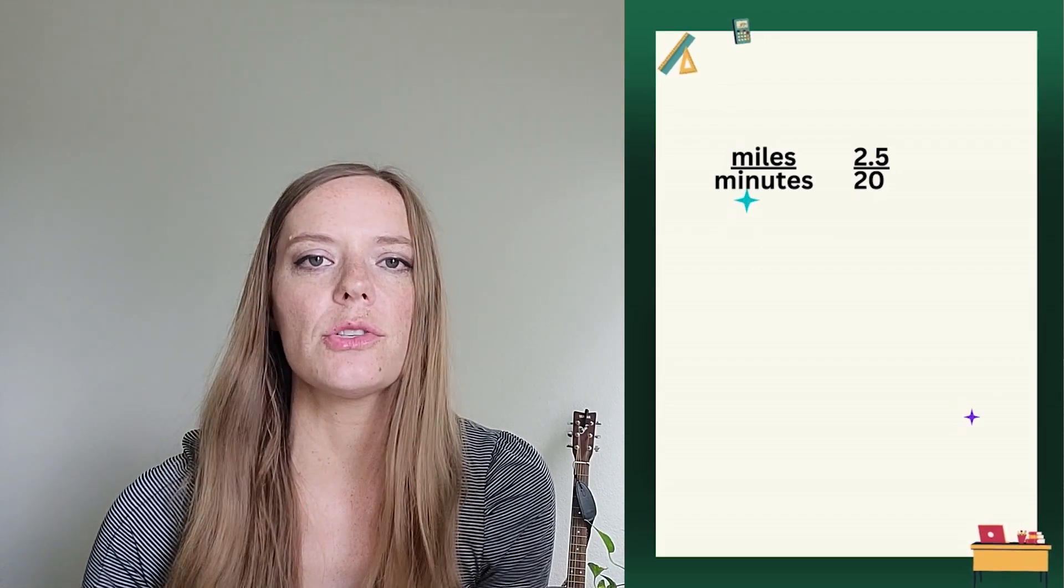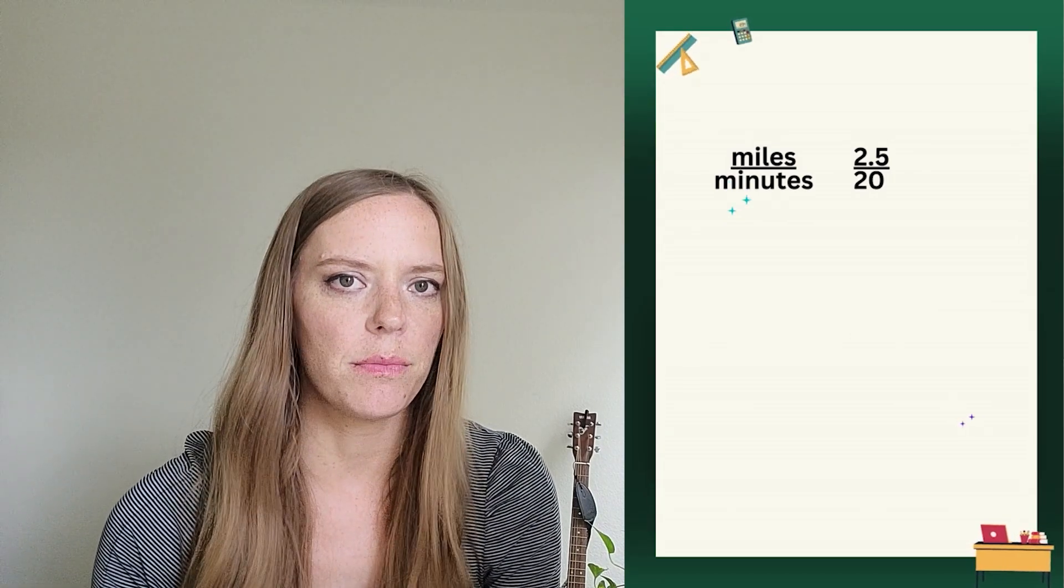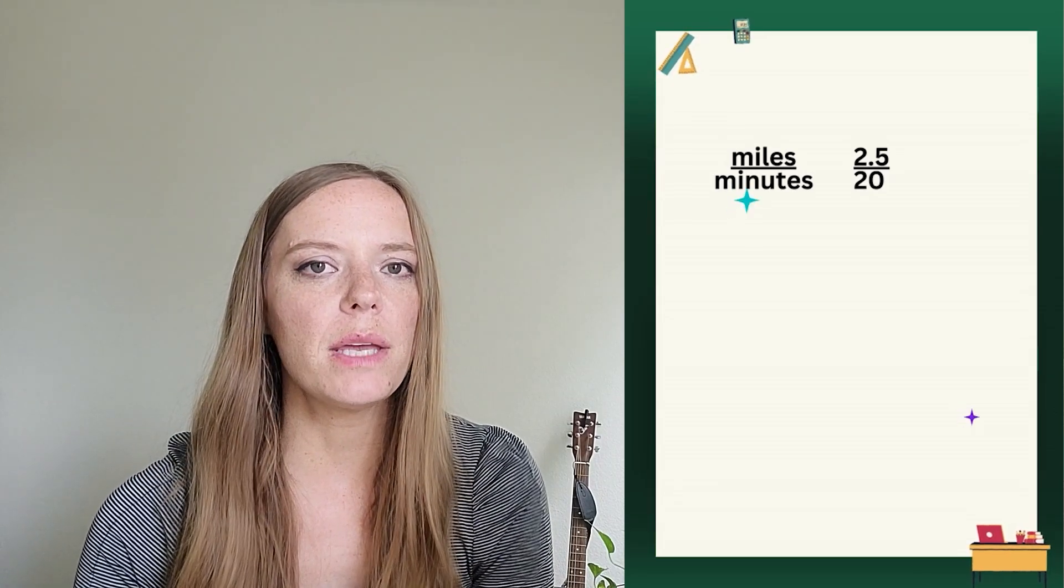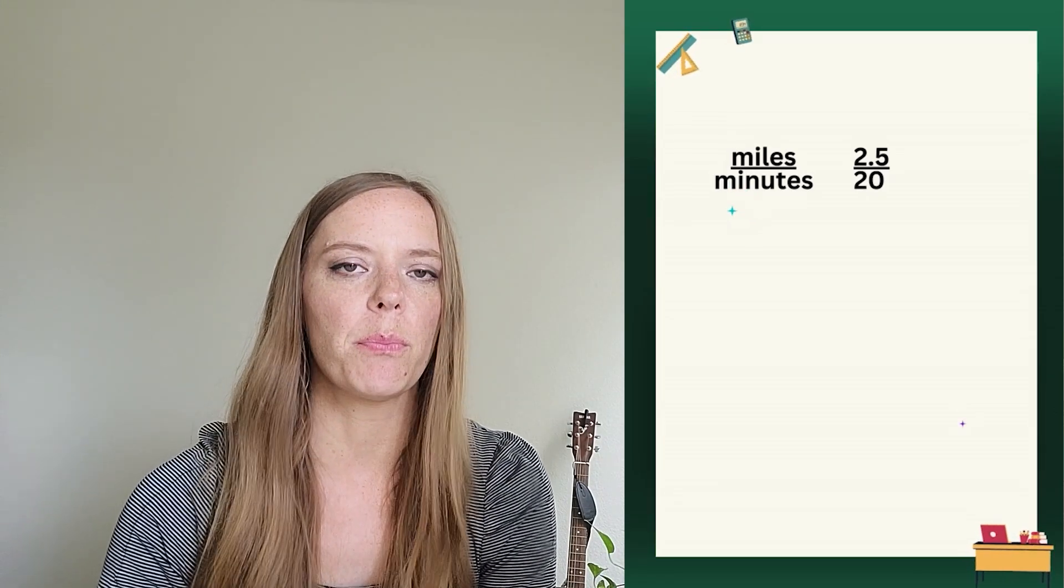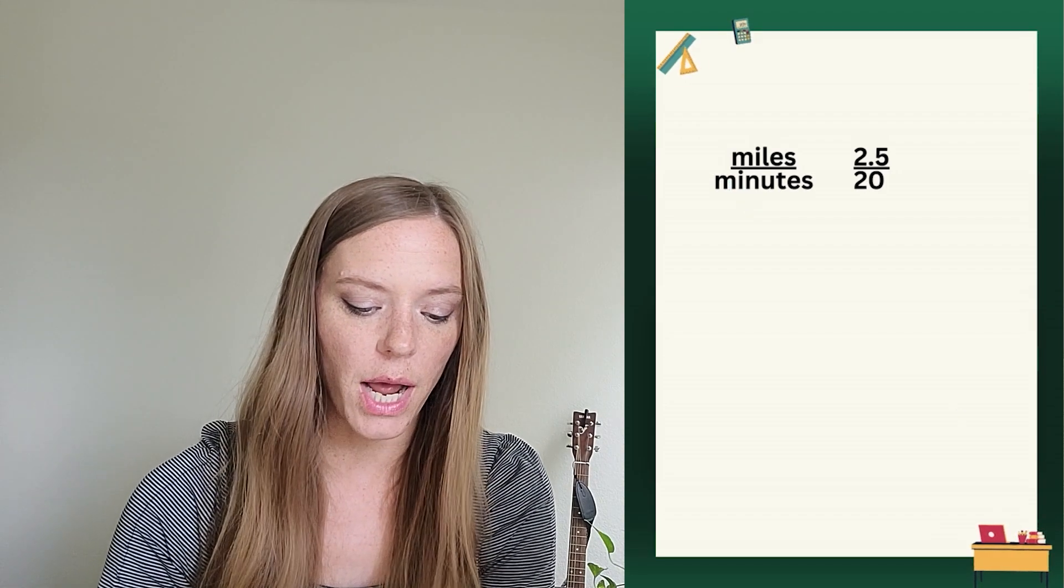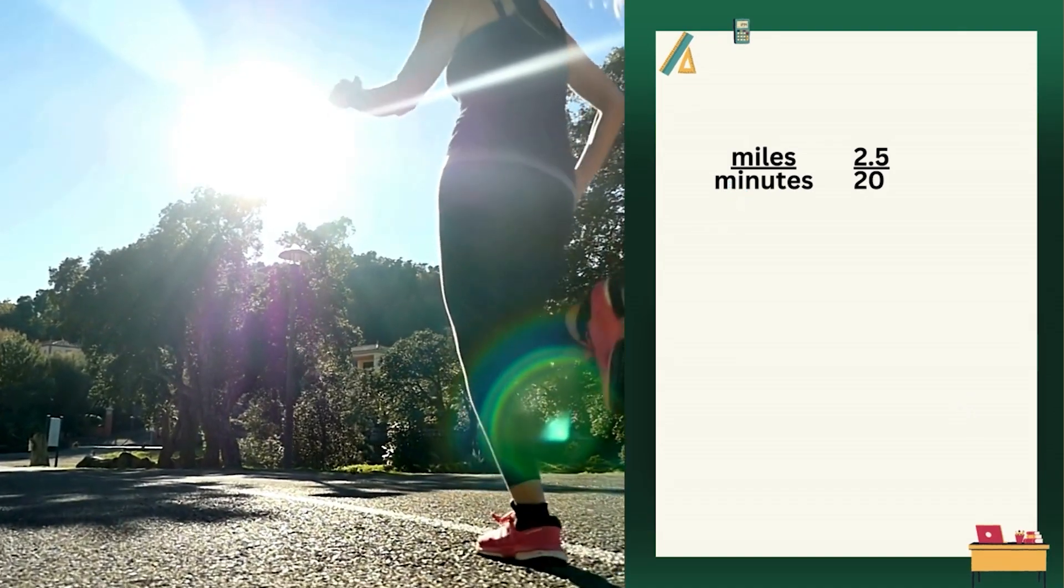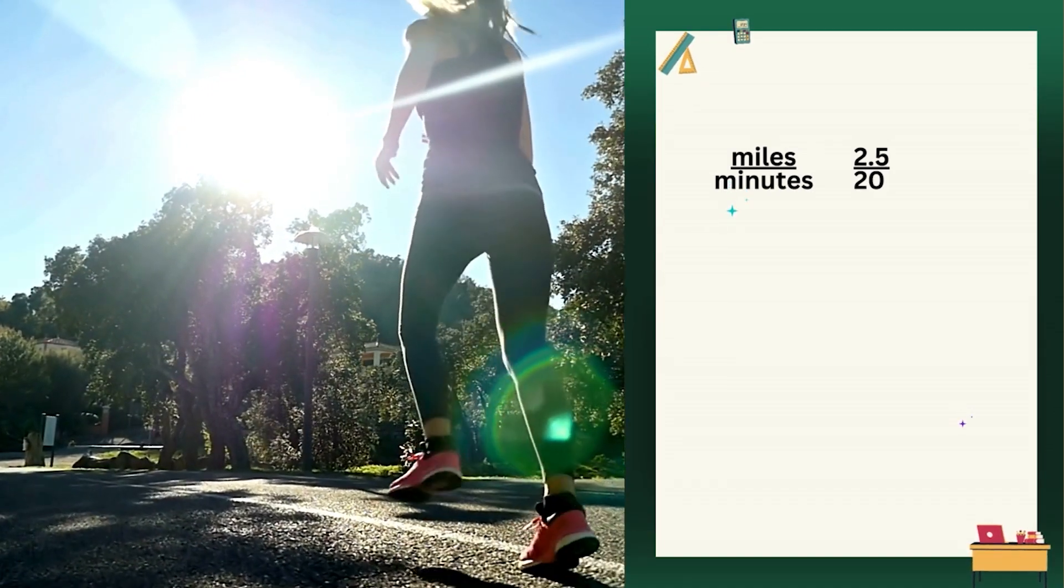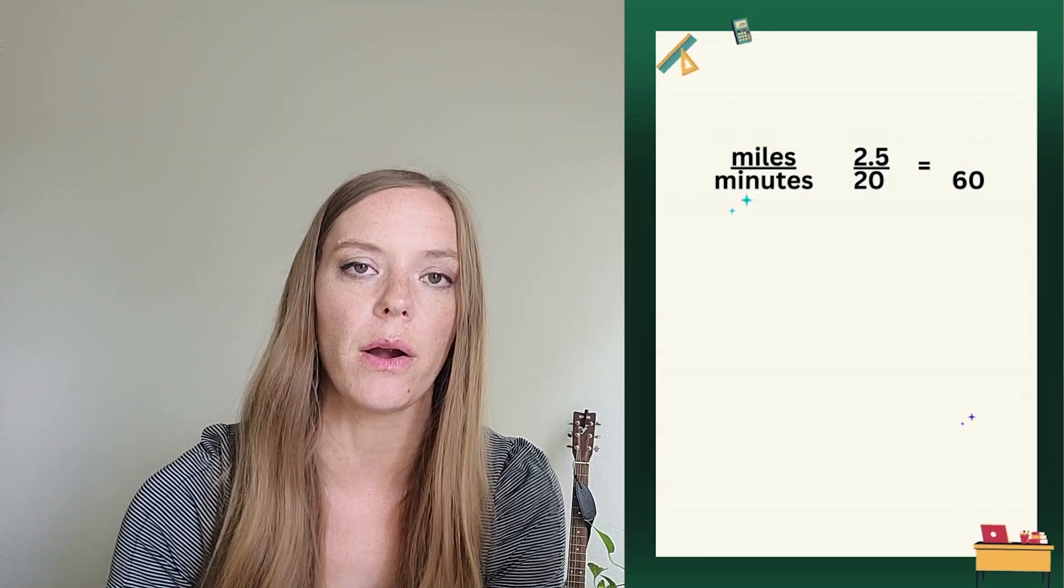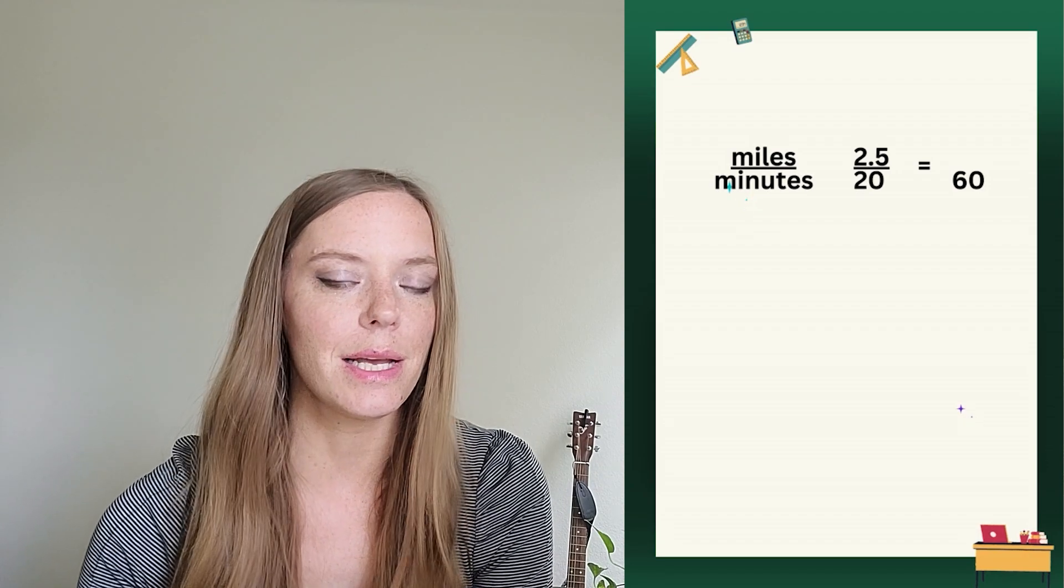Okay, so the first thing to know is just how many minutes are in an hour. Yep, 60 minutes in an hour. And so what we can do is we can set up a proportion here with our information that we already have. So we know that I ran 2.5 miles in 20 minutes. And if I want to know per hour, I need to be thinking about 60 minutes. So let's set up a proportion where the other fraction has a 60 as the denominator.